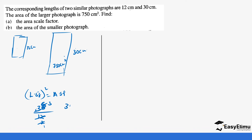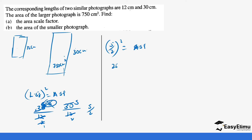So 30 divided by 12 simplifies to 5 over 2. So the linear scale factor is 5 over 2. We square this to get the area scale factor, which gives us 25 over 4. So the area scale factor is 25 over 4.